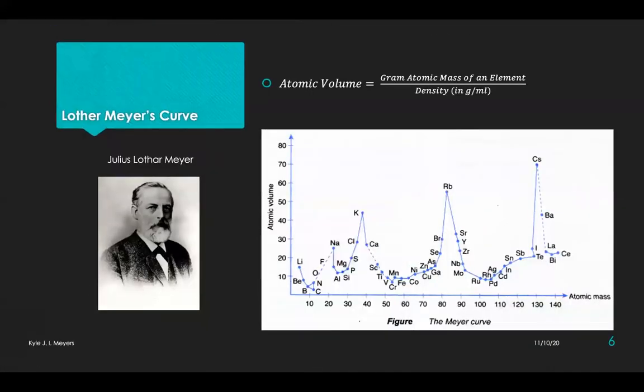Then came Lothar Meyer's curve. Lothar Meyer plotted a graph of atomic volume versus atomic mass, where the atomic volume was defined as a ratio of the gram atomic mass of an element to the density in gram per ml. From this curve, he observed that the elements having similar properties are on the same position of the curve. For example, the alkali metals lithium, sodium, potassium, rubidium and cesium are at the peaks of the curve.